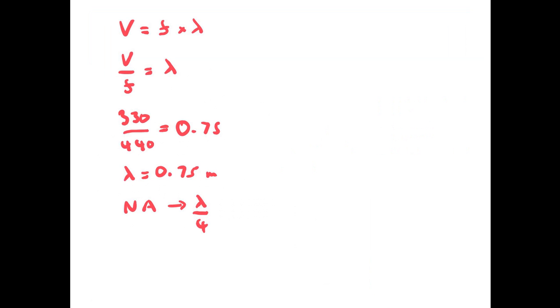And we know from a node to an antinode is a quarter of a wavelength. Therefore, we know 0.75 divided by 4 is going to give us about 19 cm. So, our pipe must be 19 cm long to get our resonance and our fundamental.